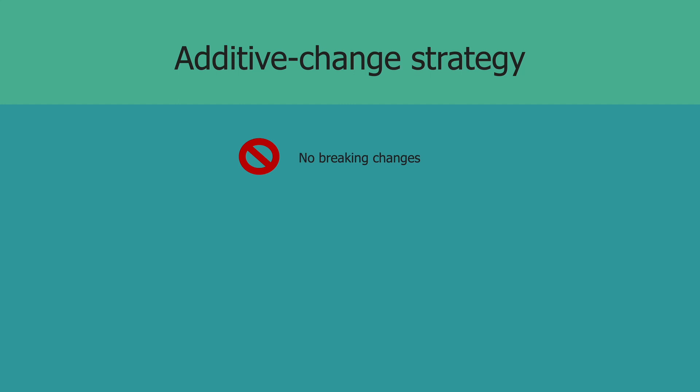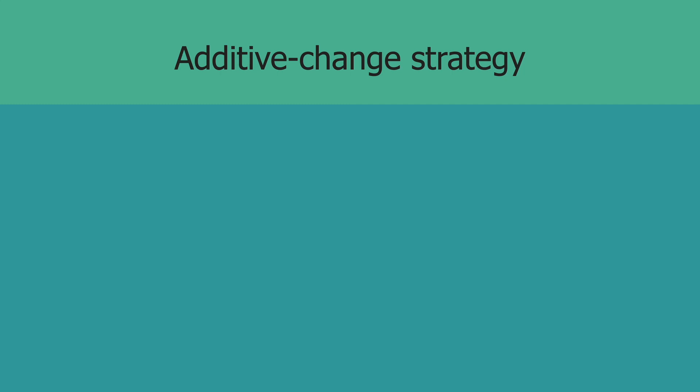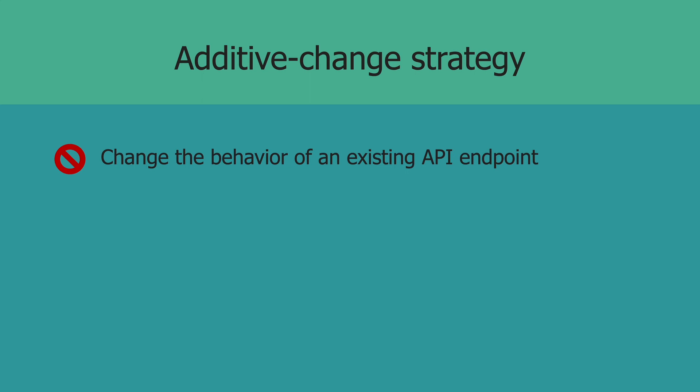So how does additive change strategy work? In this approach, you release changes of your API but without any breaking changes. It means that any updates to your API have to be compatible with previous versions. So in theory, there's a bunch of stuff you're not allowed to do. The first being that you can't change the behavior of an existing API endpoint. For example, you can't change a POST endpoint from creating a resource to accepting to create a resource — meaning you can't change it from being a request-response style API to an event-driven API.